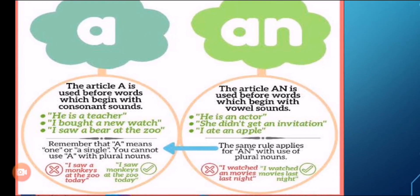The article AN is used before words which begin with vowel sounds. For example: 'He is an actor,' 'She didn't get an invitation,' 'I ate an apple.' You cannot use AN with plural nouns. For example, 'I watched an movies last night' is a wrong sentence. The right one is 'I watched movies last night.'